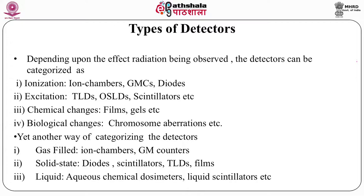What types of detectors are available? Depending upon the effect of the radiation being observed, detectors can be categorized as ionization-based detectors — the most popular among them are ion chambers, Geiger-Müller counters, and semiconductor diodes. Then there are detectors based on the excitation caused by radiation: thermoluminescent detectors (commonly known as TLDs), optically stimulated detectors (OSLDs), and scintillator detectors.